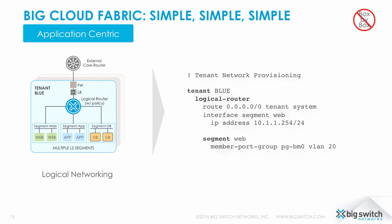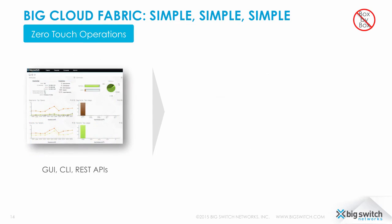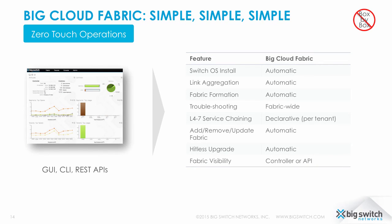There's no more box-by-box or interface-by-interface configuration needed to implement an application-centric network — the BCF controller does all that for you. Software upgrades are performed in-service with no impact on forwarding, made possible by the redundant controller cluster and the Clos topology. Upgrades are accomplished with a single command — automated and fast.